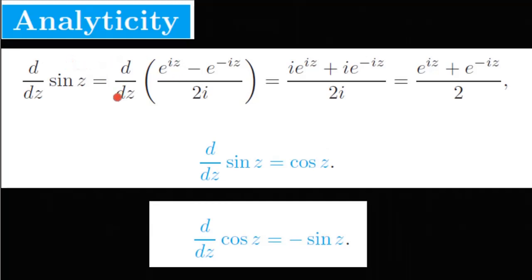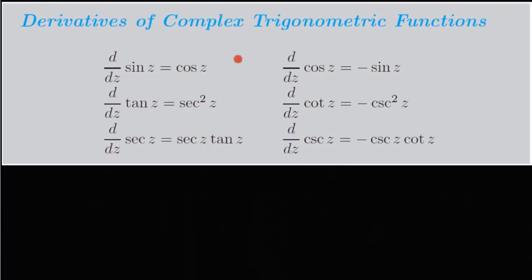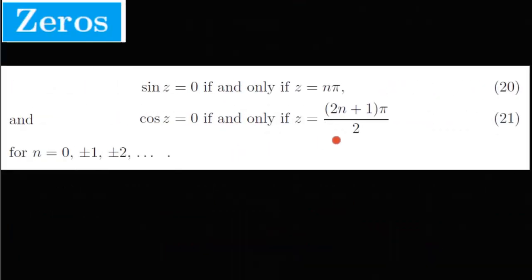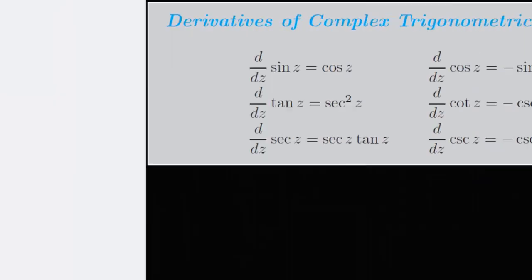The derivative of cos(z) is equal to minus sin(z). This minus sin(z) can be defined as a differential. Sin(z) and cos(z) are analytic. For tan(z), defined as sin(z) divided by cos(z), if cos(z) is zero — that is when z equals (2n+1)π/2 — then tan(z) is analytic everywhere else.